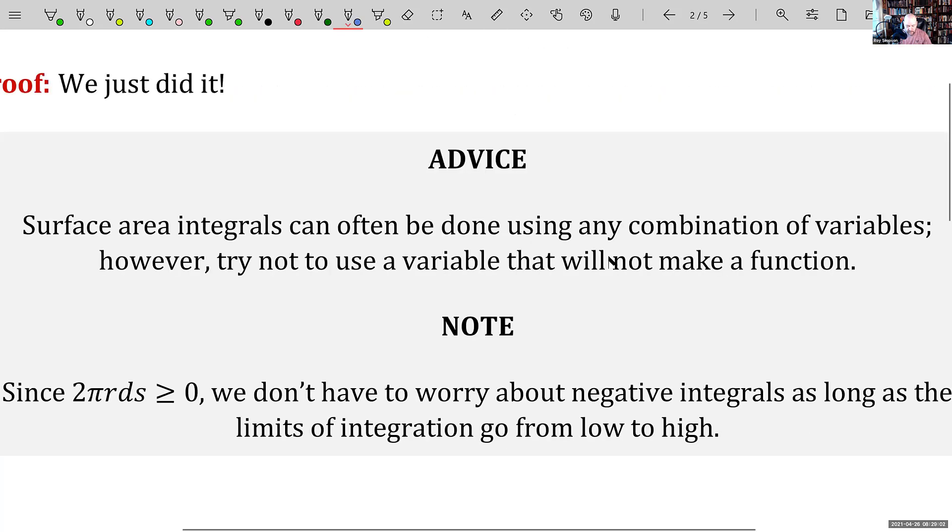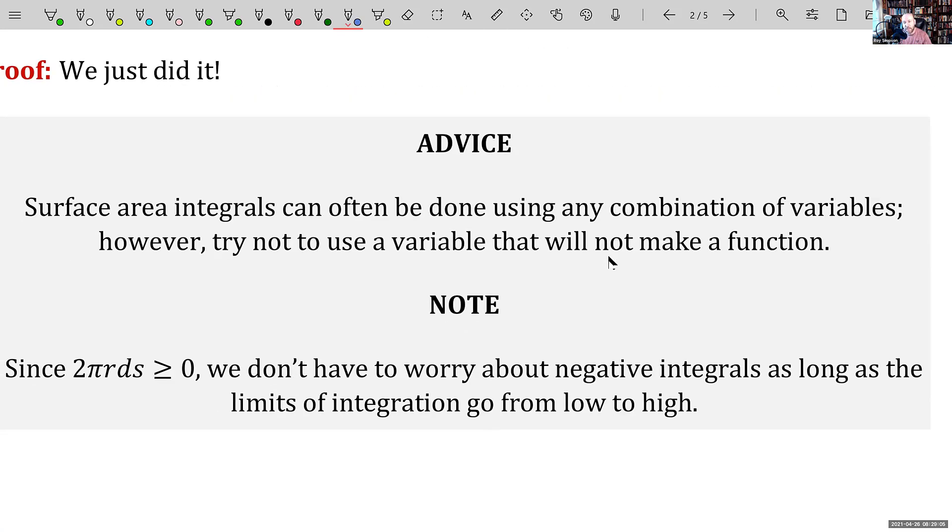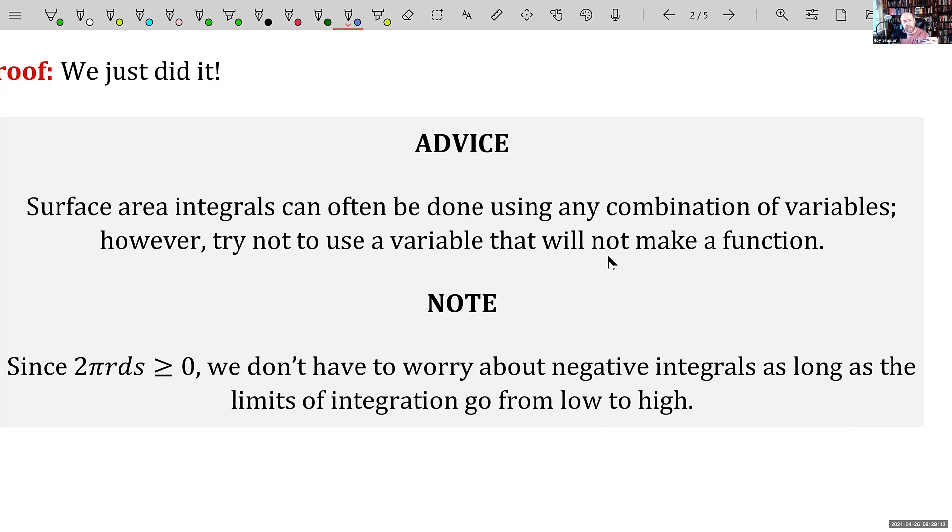Advice? Surface area integrals can often be done using any combination of variables. However, try not to use a variable that will not make a function. So that advice kind of goes along with the last example we did, where we had our choice. Do you want to do this with respect to X or with respect to Y? That will often be the case now where you can ask yourself that question. You can make the world much easier, or at least the integral much easier by making the appropriate choice. It just takes a few moments at the very beginning to set it up, to see like which one of these would I like to differentiate?